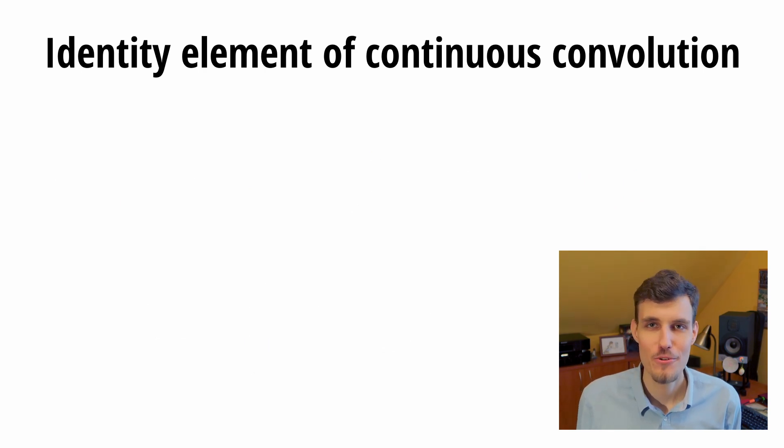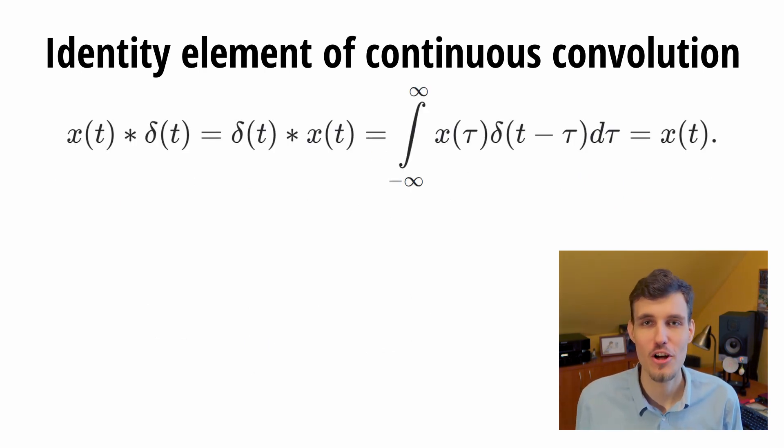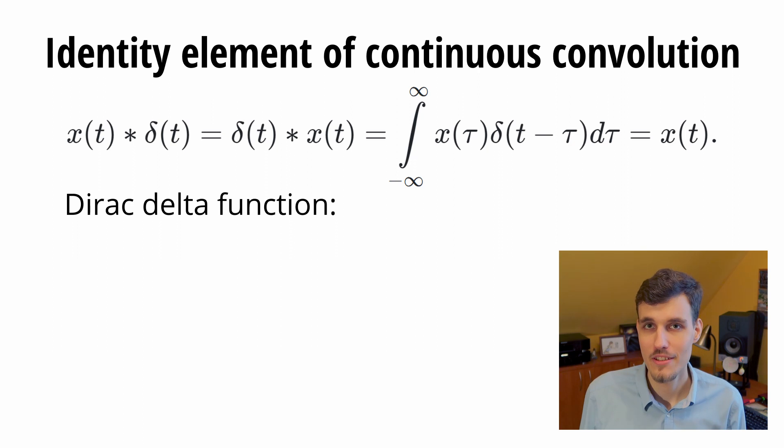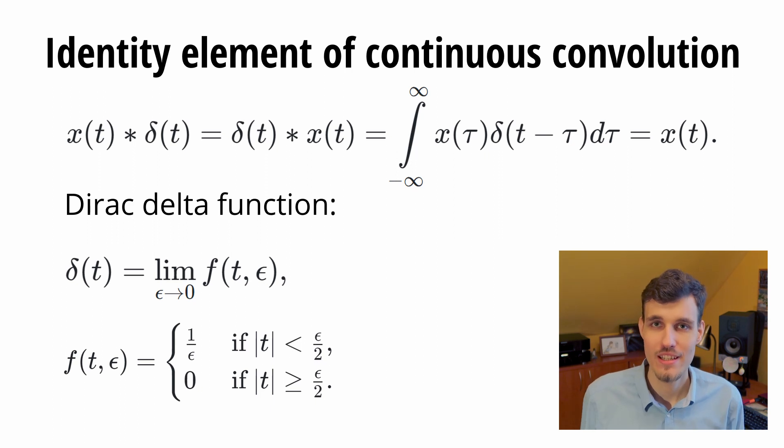Now, let's look how the identity element should behave in the context of continuous convolution. It turns out there is actually no function that satisfies this equation. We need a different type of entity called generalized function or a distribution. It turns out that the function delta that satisfies this identity element property is called the Dirac delta function and it can be approximated by an infinitesimally narrow impulse of infinite height. The definite integral over Dirac delta function is equal to 1.